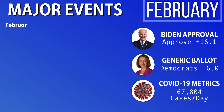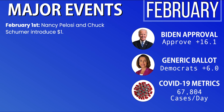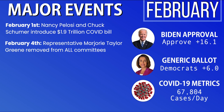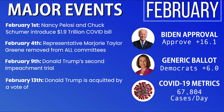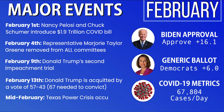Moving into the month of February, on February 1st, Nancy Pelosi and Chuck Schumer worked together to introduce the $1.9 trillion COVID-19 stimulus bill. On February 4th, Representative Marjorie Taylor Greene of Georgia's 14th District was removed from all committee assignments. On February 9th, Donald Trump's second impeachment trial began in the United States Senate. On February 13th, Donald Trump was acquitted by a vote of 57 to 43, with 67 needed to convict. 50 Democrats voted to convict, and seven Republicans joined as well. And in the middle of February, the Texas power crisis occurred as a result of snowstorms.